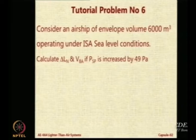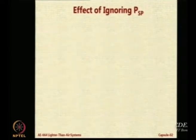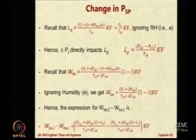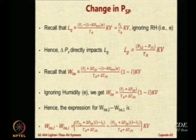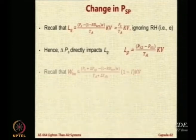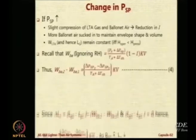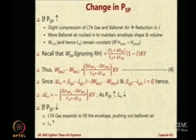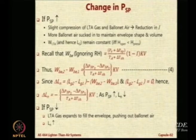Using the same expression you will be able to get these two numbers. For your ease I will show you the expressions so that you can use them. Delta Ln will be equal to minus of (delta PSP2 minus delta PSP1) divided by (TA plus delta TSH), into K into V.